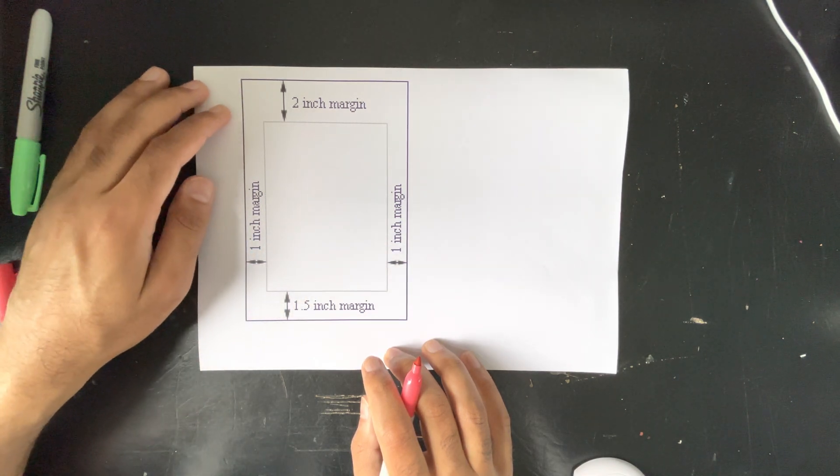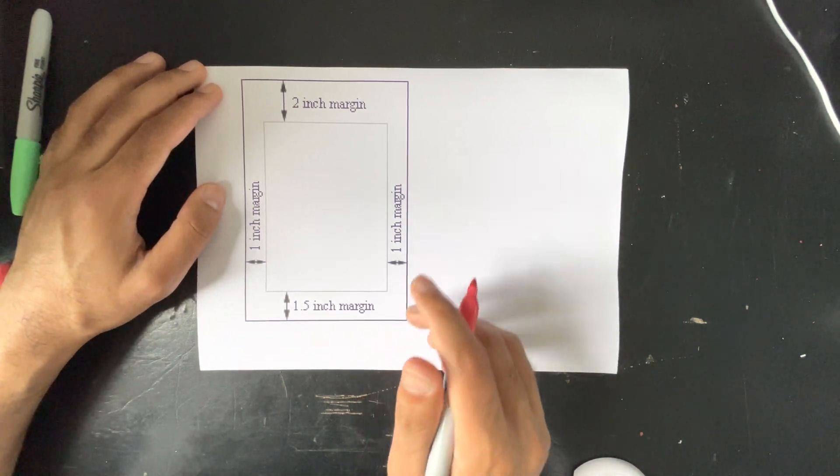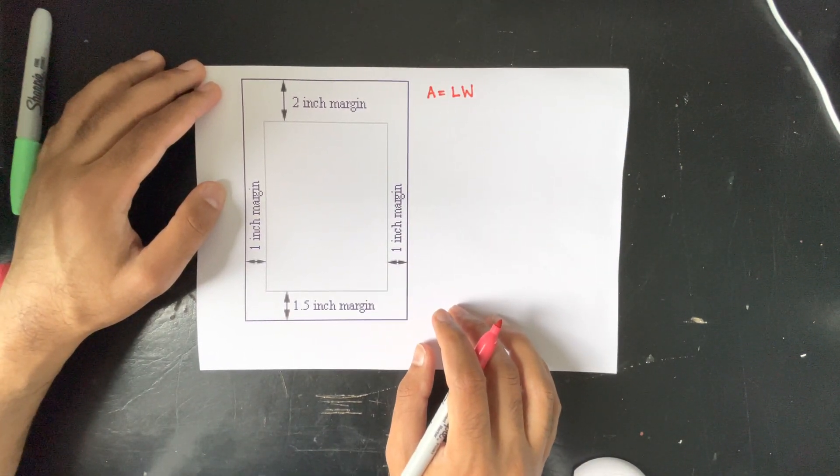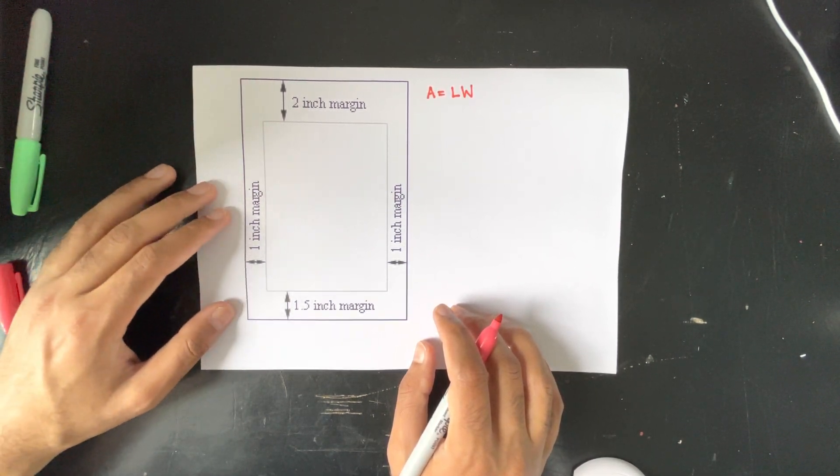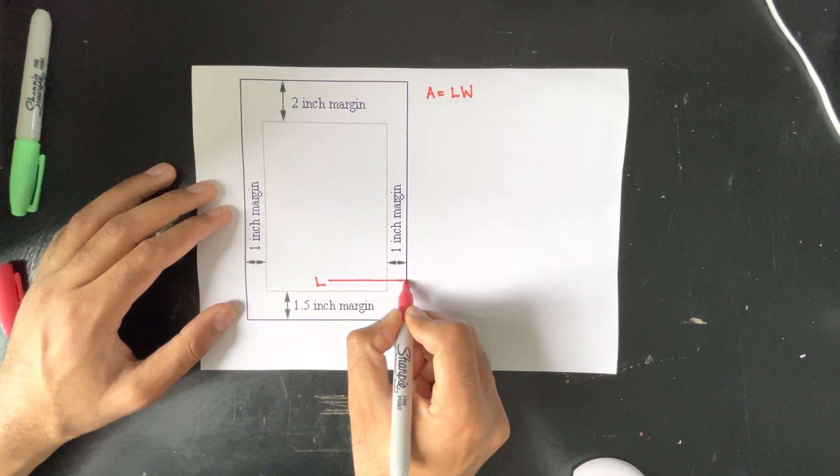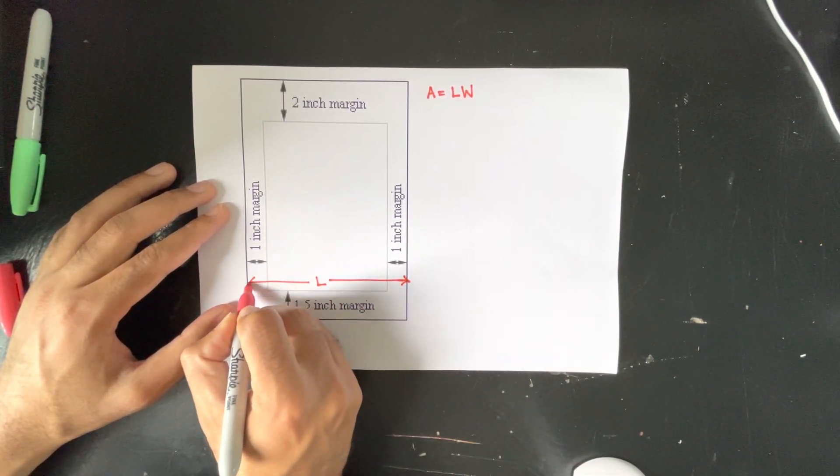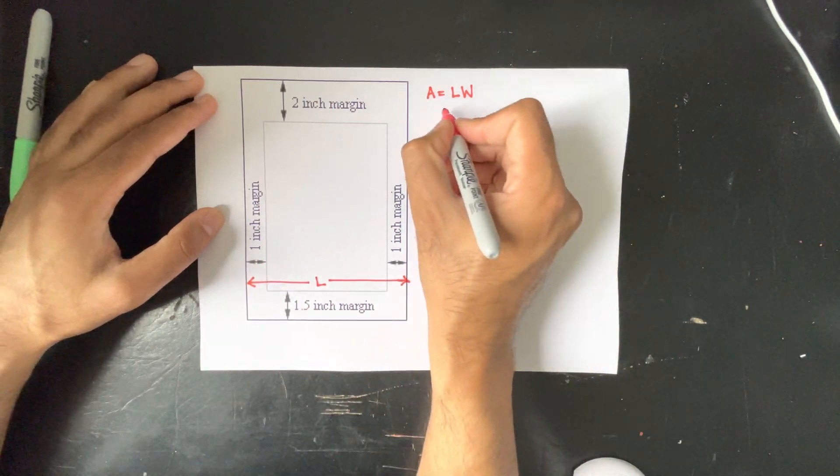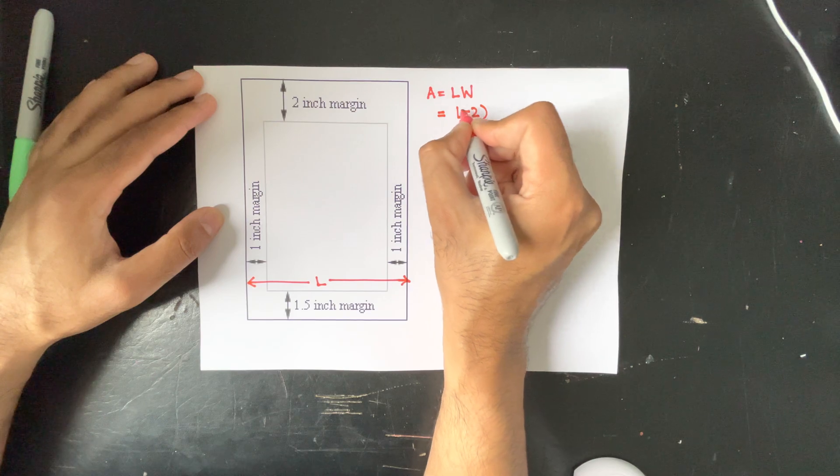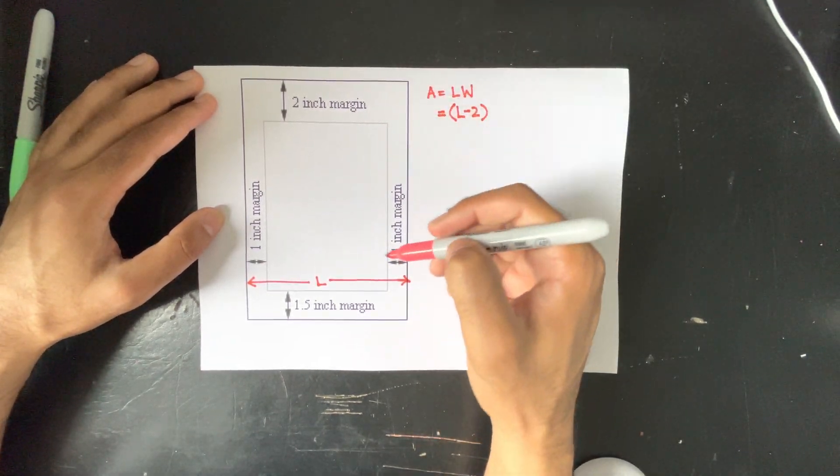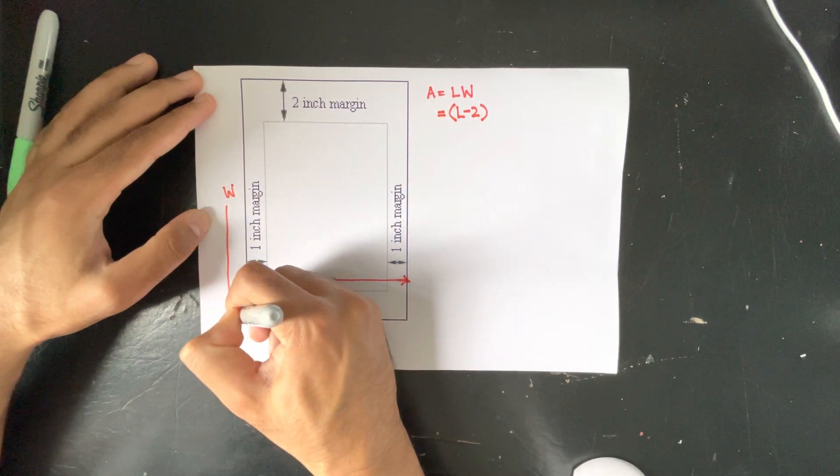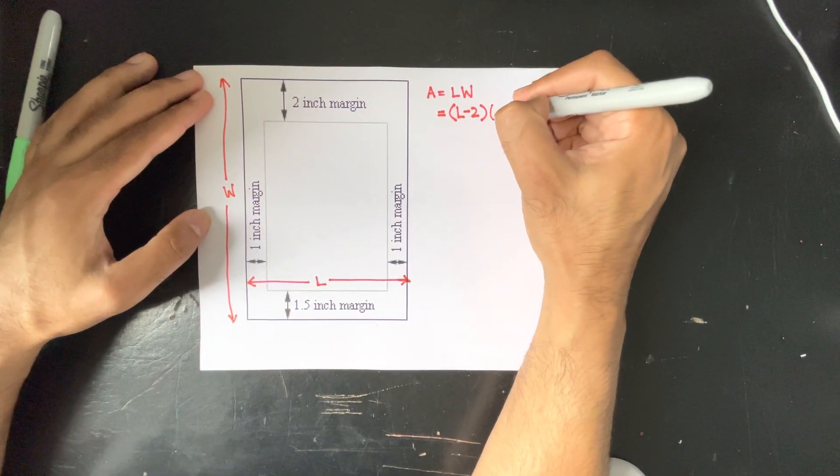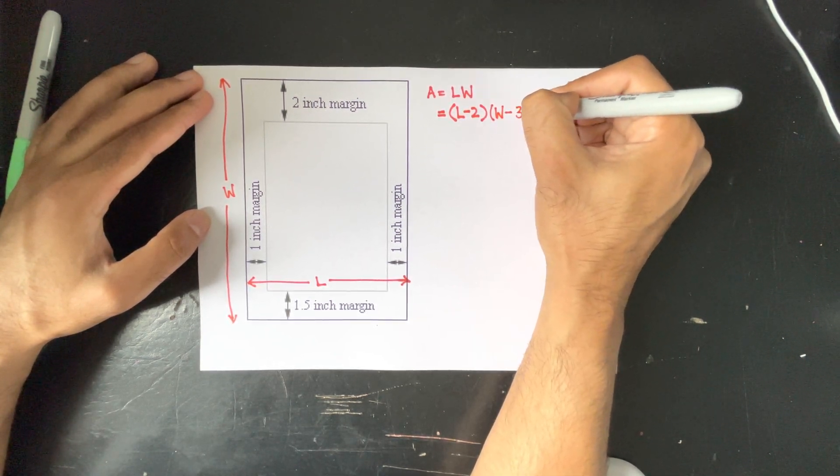Now we know the largest printed area will be equal to its length by its width. Now we know that its length is given as such, however we need to come in one inch from each side so we will get the length minus two inches and the same for its width. So the width will be W minus 3.5.